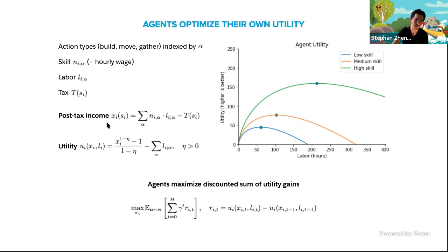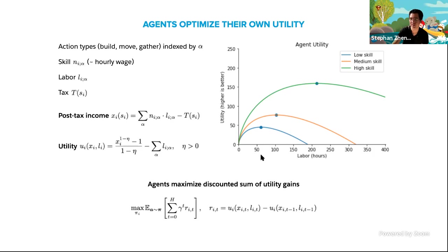The post-tax income feeds into the utility function, which is a function of post-tax income and labor. The income part is a power law where eta is a constant bigger than zero, and labor is subtracted linearly. In a simplified cartoon with one source of labor, you can see this utility function has a hill-like behavior. For different skill levels, the maximum will be at different numbers of hours worked — that's another way in which these agents are differentiated from each other.